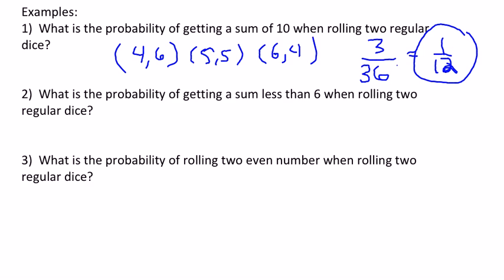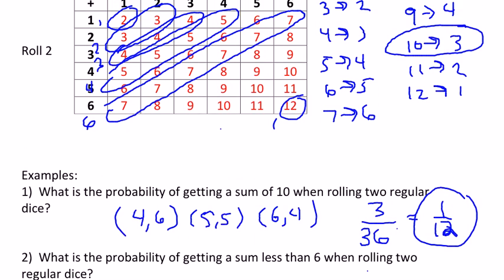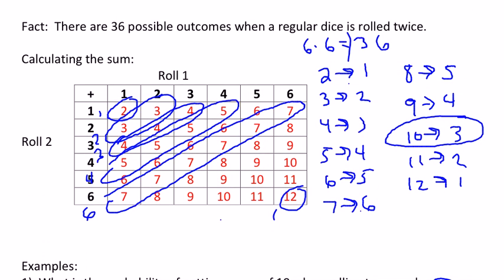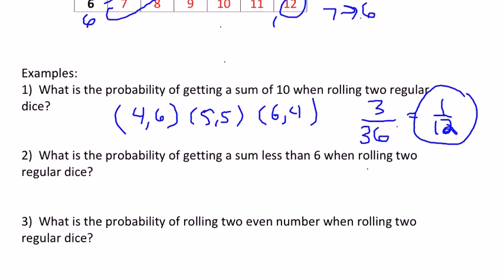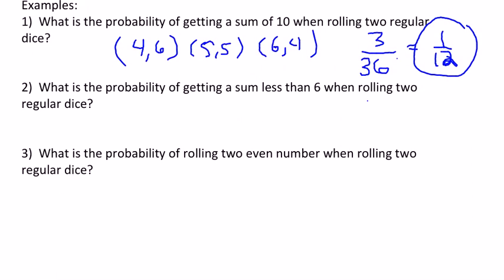What's the probability of getting a sum less than six when rolling two dice? Remember the pattern — getting less than six covers sums of two, three, four, and five, which have one plus two plus three plus four ways, totaling 10. So the probability is 10 out of 36, which simplifies to five out of 18.